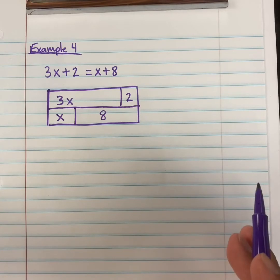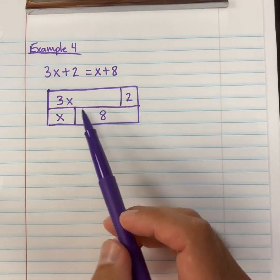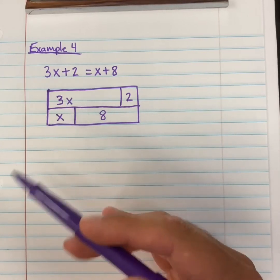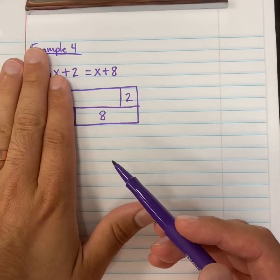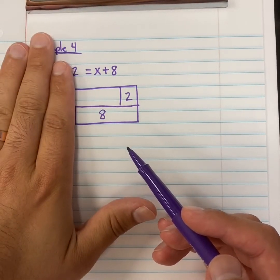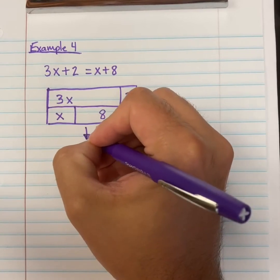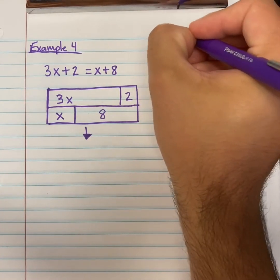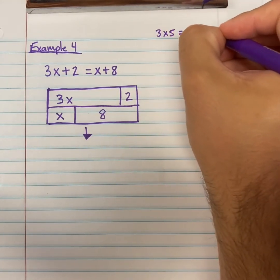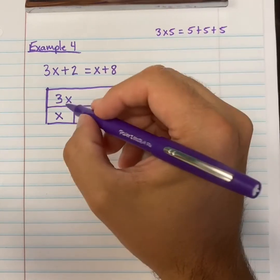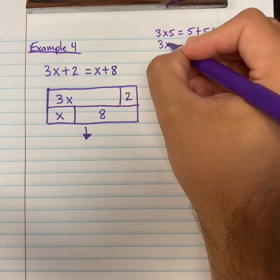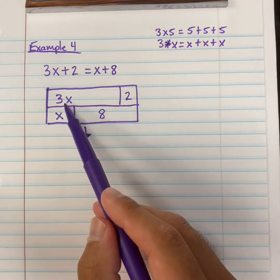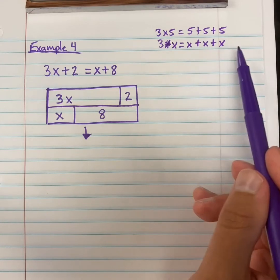How are we going to use this bar model to help us solve this equation? What I'm going to do is simplify this bar model so we can eliminate some things. If things match up on the bottom and the top, we can eliminate those from our equation — it's still going to be equal. So let's rewrite this. 3x is the same as 3 times some number. If you had 3 times 5, that's 5 plus 5 plus 5 — repeated addition. Same thing here: 3 times x equals x plus x plus x. So let's write the top as x plus x plus x plus 2.